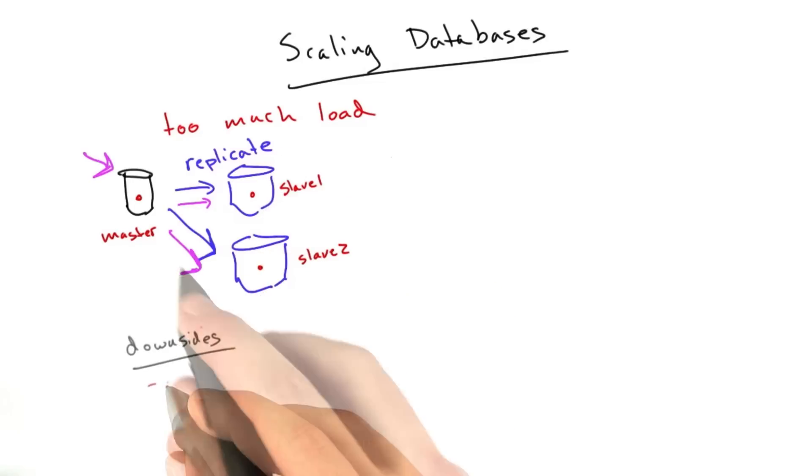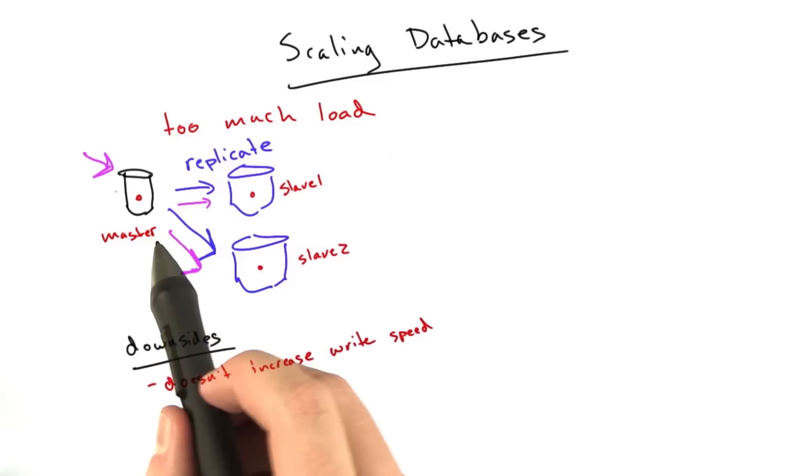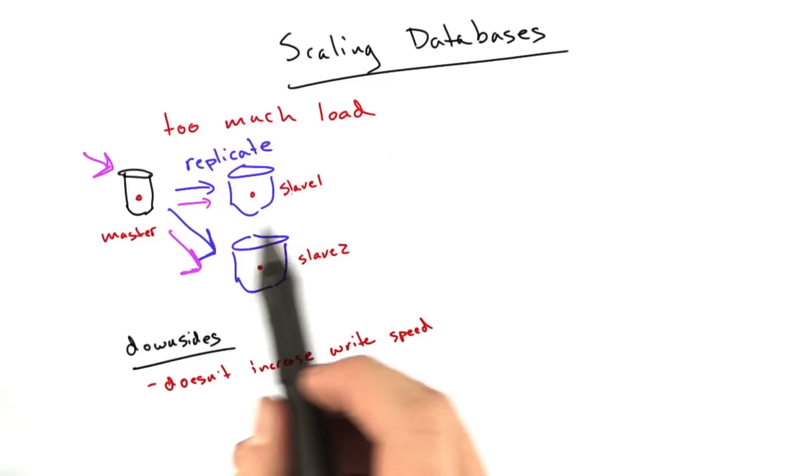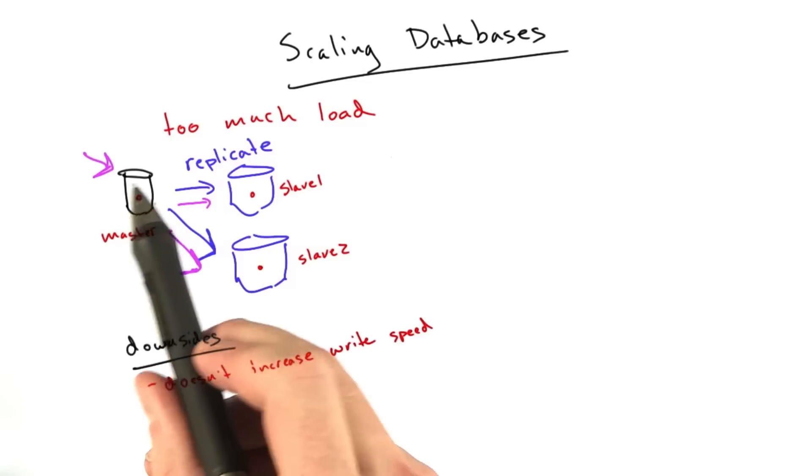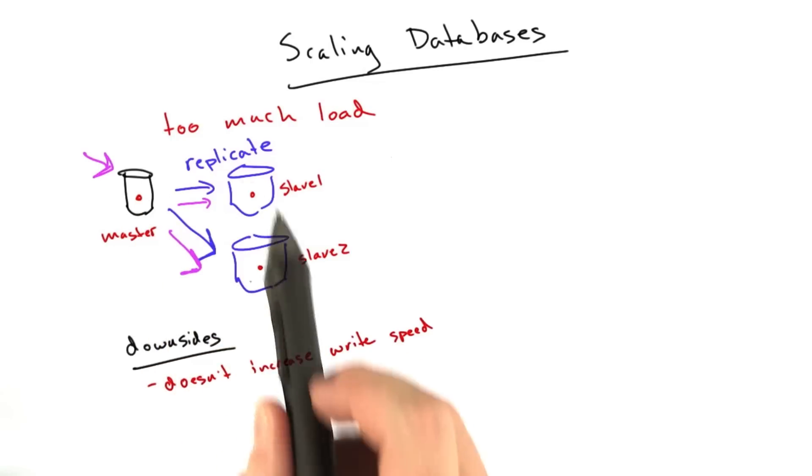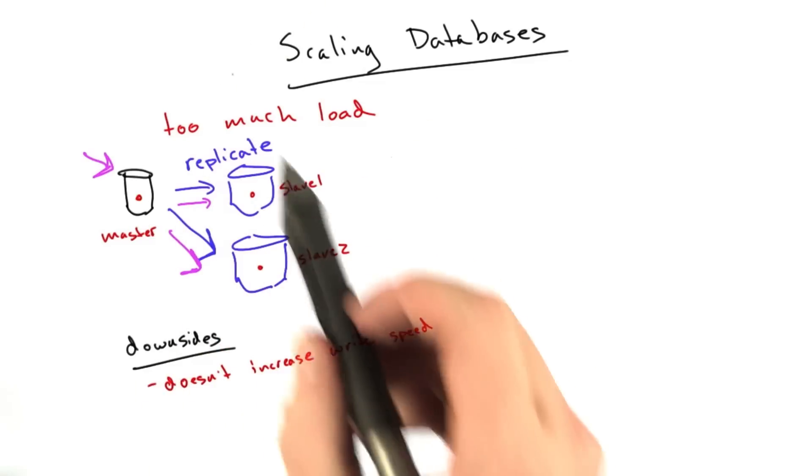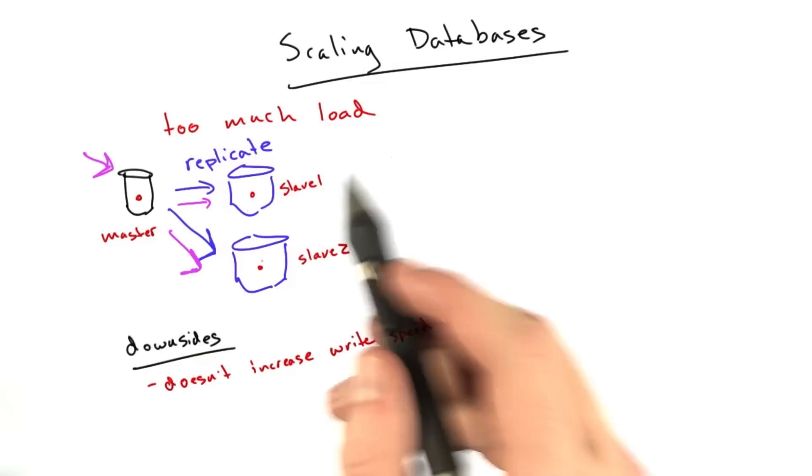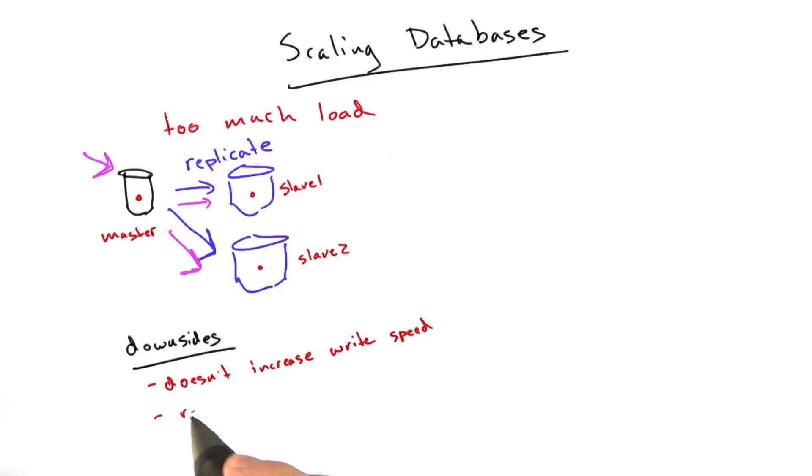Now there are much more complicated schemes where you might have a multi-master system or a bunch of databases that are all working together. But this is a fairly common setup for spreading around the reads. Because generally, in most systems, you have a lot more reads than you do writes.